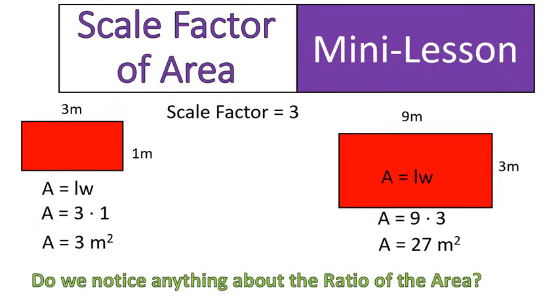So if our scale factor is three, the ratio of the areas is three squared, right? It's nine, the ratio between the two, right? 27 divided by three would give us nine. So our ratio remains the scale factor squared.